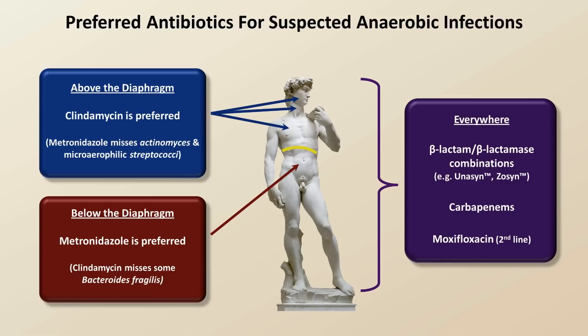Moxifloxacin is generally considered a second-line agent, perhaps for patients with severe beta-lactam allergies. Remember that metronidazole should never be used as monotherapy except for C. diff and should instead be combined with something that provides excellent gram-negative coverage, which is frequently ciprofloxacin. The decision between metronidazole plus cipro versus zosyn or carbapenem is often arbitrary, driven more by concerns for side effects or availability than by nuances of microbiologic coverage. One exception is the relatively recent rise in quinolone resistance among E. coli in the United States, which may make a broad-spectrum beta-lactam a preferred option in some circumstances.